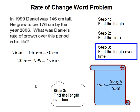Step three, find the length over time. So again, the rate is length over time. We have 30 centimeters in seven years. When we divide that out, his rate of growth would be 4.29 centimeters per year. This completes our problem.